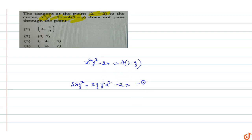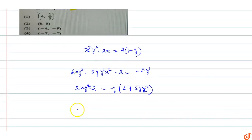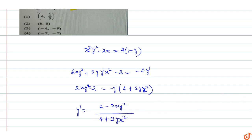This equals -4·y', where y' is dy/dx. Collecting y' terms: dy/dx·(2xy²) - 2 equals -4·y' - 2y·x². Rearranging, y' equals (2 - 2xy²) / (4 + 2yx²).